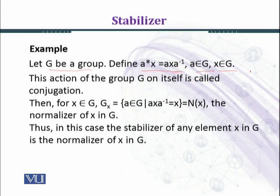This conjugation is G's action on itself, and we had defined this map from G cross X to X previously if you recall.